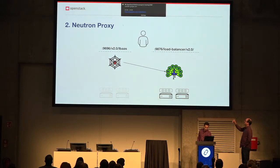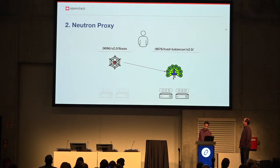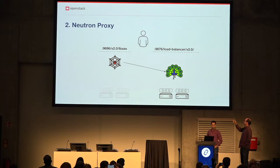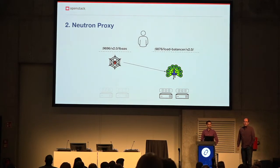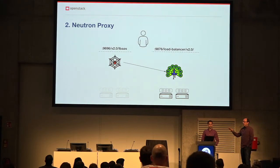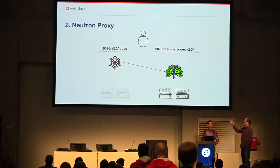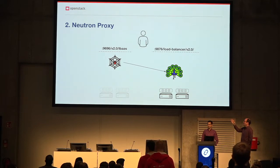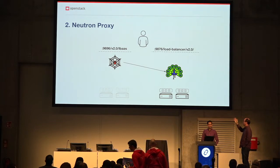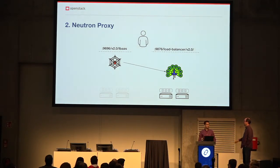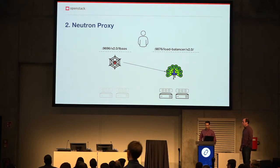Traffic goes to the LBaaS endpoint or LBaaS extension on Neutron — v2.0/lbaas — into Neutron, and the plugin ships it over to Octavia and back. One caveat: Octavia and Neutron both manage quotas, so you need to be careful to set them similarly. For example, if you have 10 load balancers on Neutron and 5 on Octavia, and a user wants to create a sixth, Octavia will block that. You've got to be careful because they both do their quota checks.